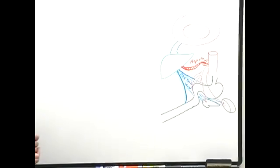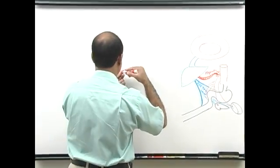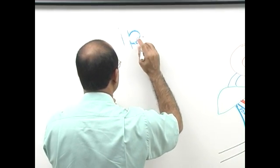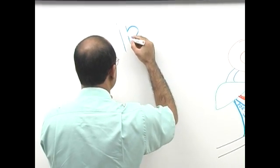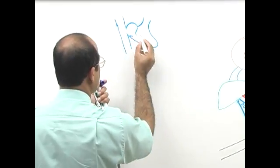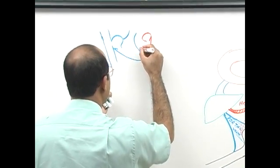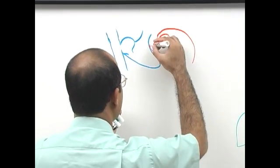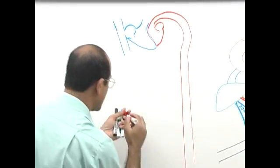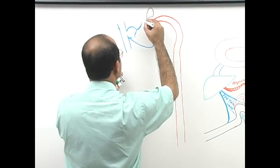Let me draw this more clearly and put the liver into proper perspective with the whole body circulation. Here I draw the right heart — right atrium, right ventricle, pulmonary artery — and here we have the left atrium and left ventricle. From the left ventricle comes the aorta and the systemic circulation. Here are the lungs where pulmonary blood gets oxygenated in the pulmonary capillaries, and oxygenated blood returns to the left ventricle.